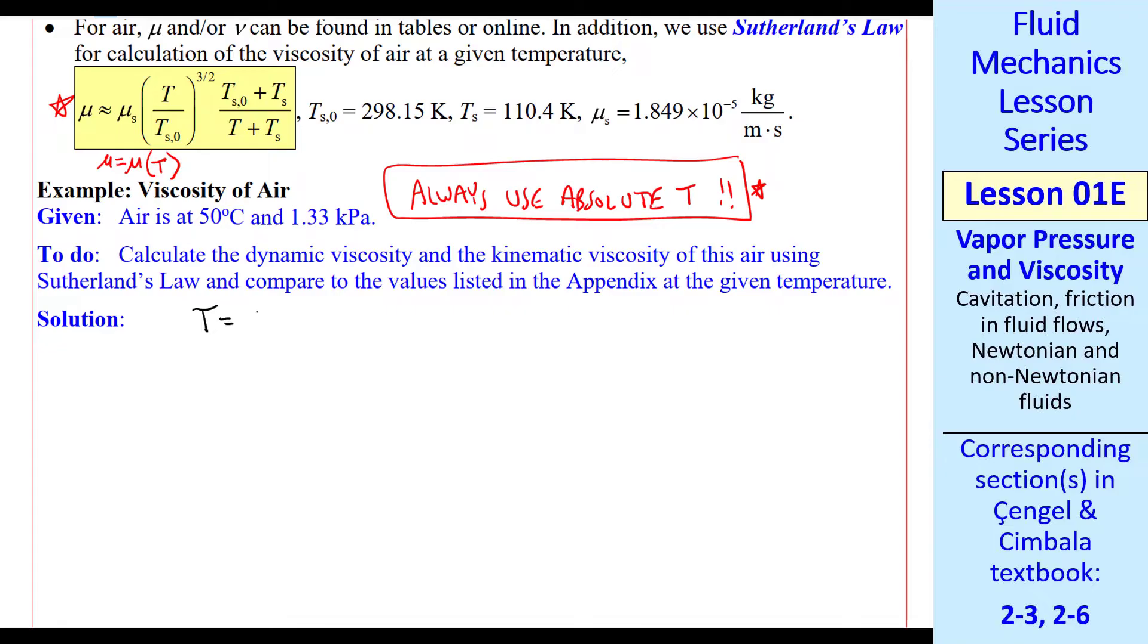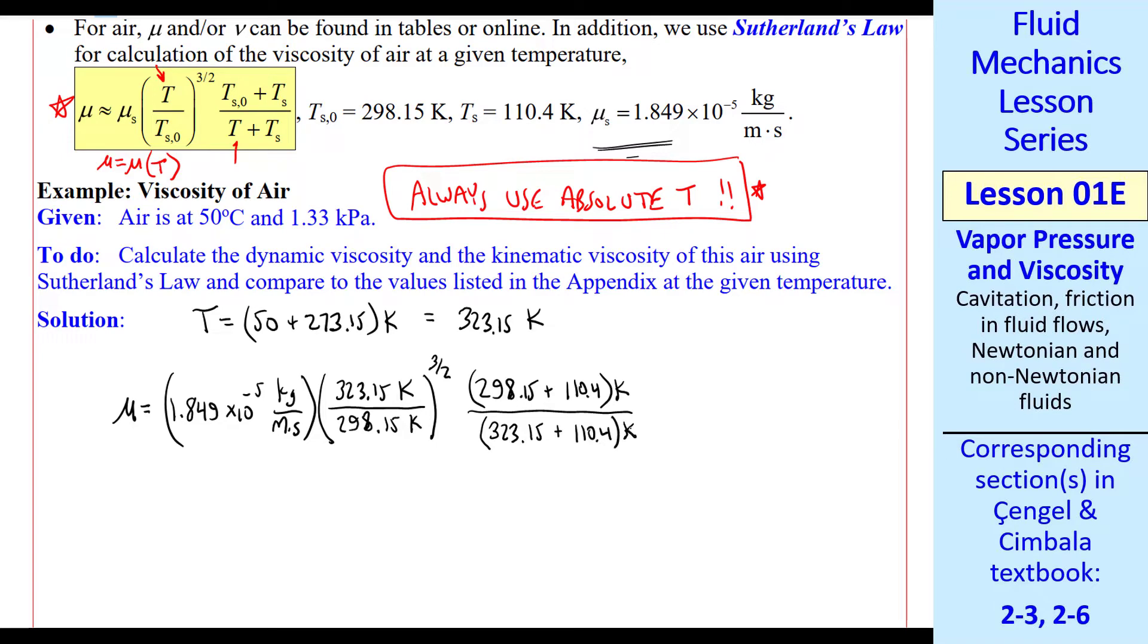So first, let's convert T. 50 degrees C becomes 323.15 K. We'll use that here and here in Sutherland's Law. Plugging in the constants, this is mu_s up here, and T_s naught comes from here. T_s is 110.4 K, this is our temperature, and another T_s. Notice that all the K's cancel. My calculator gives me 1.9661 times 10 to the minus 5 kilograms per meter second. We round to three digits for our final answer.